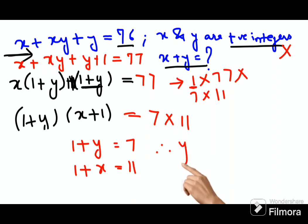Therefore I can say y value is nothing but 6 and x value is nothing but 10, and in order to find x + y, x + y then becomes just 16.